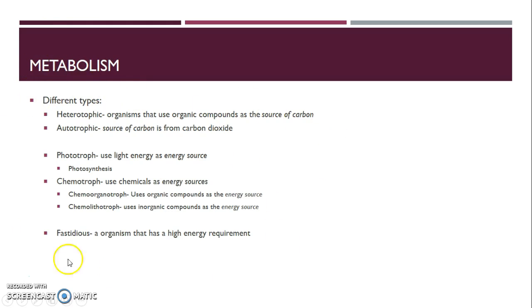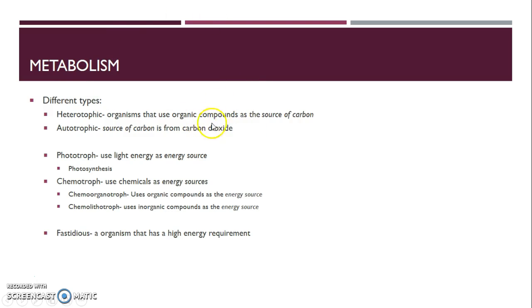Now there are other types of metabolisms that occur other than just aerobic respiration. There are two different categories: the source of carbon and the source of energy. If your source of carbon is from organic compounds, you're called heterotrophic. Humans are heterotrophic because the food we eat provides the carbon source we need to build carbon molecules. If you get your carbon source from carbon dioxide, which is not organic — CO2 is not organic, you need a carbon and a hydrogen to be organic — then you are autotrophic.